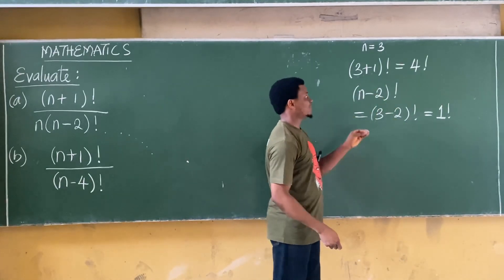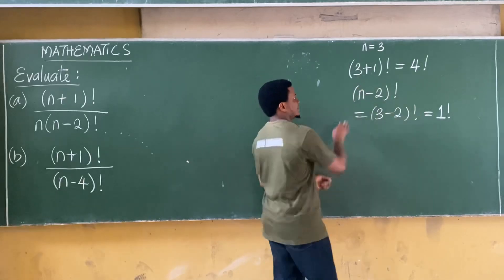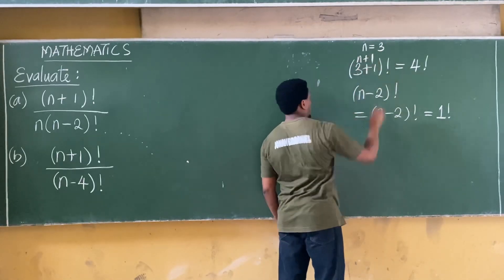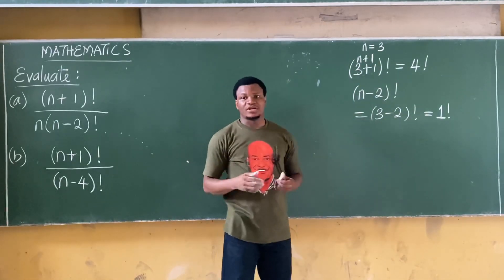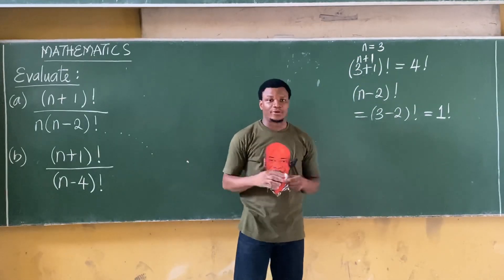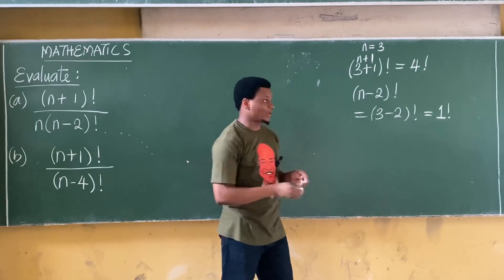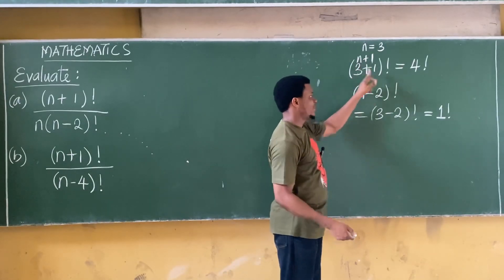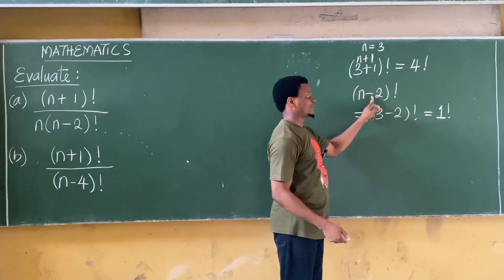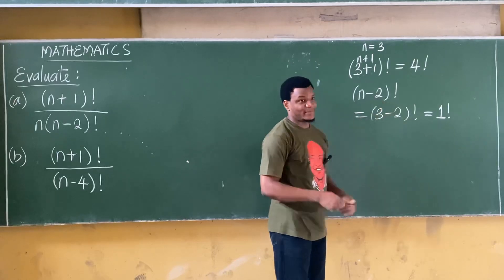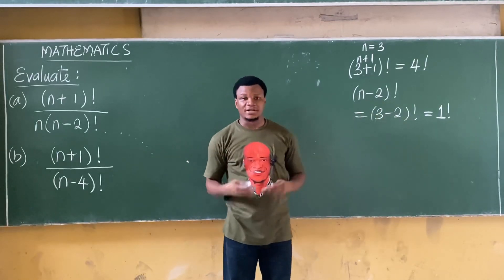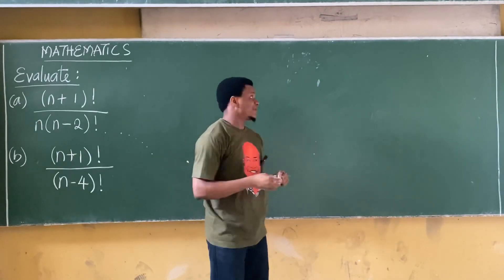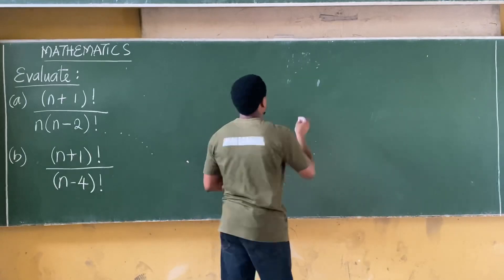The greater factorial is n+1 — that's 3+1. So n+1 is the greater factorial. Our task is now to express n+1 in terms of the smaller factorial, which is n-2. Let's see exactly how we do that.